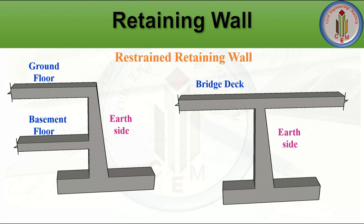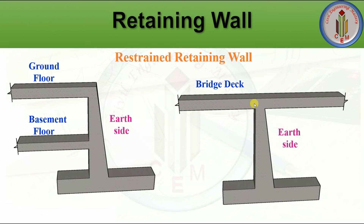Another type is the restrained retaining wall, found in buildings as basement walls and in bridges as abutments. In both cases the stem is supported by the floor slab in buildings and by the bridge deck in bridges. For analysis purposes, the stem can be considered as a beam fixed at the bottom and restrained at the top.